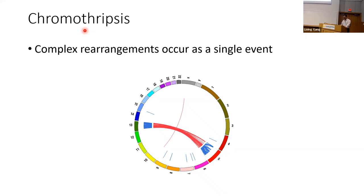The field was puzzled for years, but now we know this is true — there are actually multiple mechanisms that can produce chromothripsis as a one-time event.